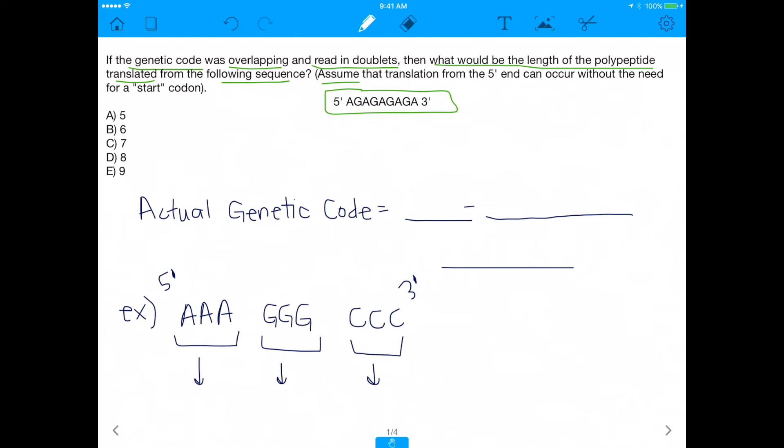You can assume that translation starts from the 5' end and it can occur without the need for a start codon. So first of all, when I say genetic code, what am I referring to? The genetic code is the code that we use to go from DNA to protein. Obviously there's an mRNA in the middle, but basically the genetic code tells us what sequences in the DNA will give us certain proteins. And that's important because proteins make up life.